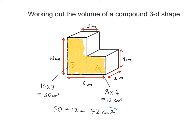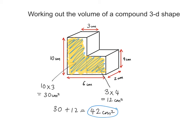Now that we have the area of the cross-sectional piece, all I need to do is multiply that by the width of the 3D shape. The width is 2, so I multiply that by 2 to work out the volume of the compound shape. So it's 42 times 2, which is equal to 84. The units for volume are centimeters cubed, and that's the volume of this 3D compound shape.